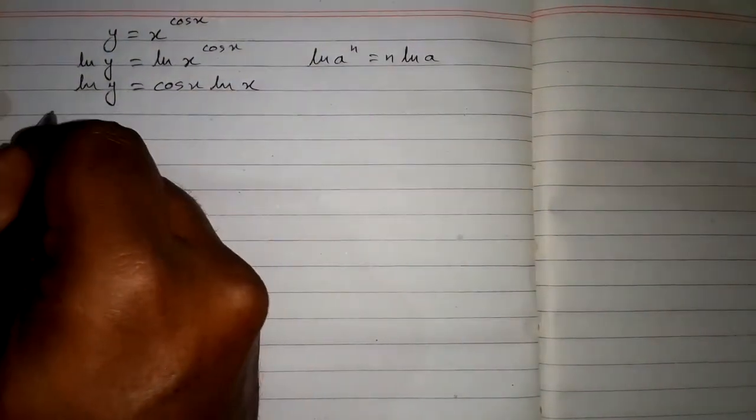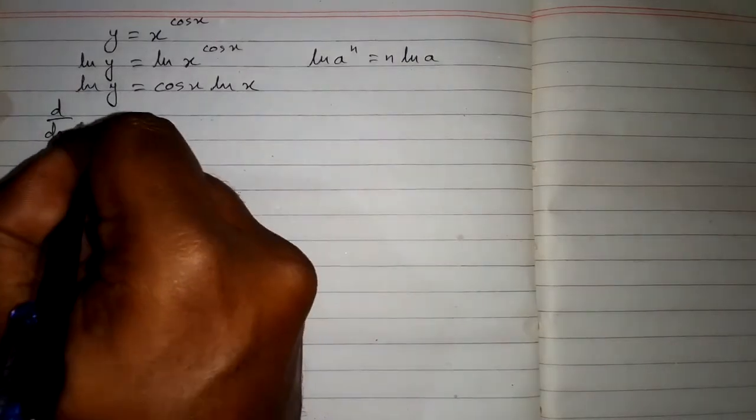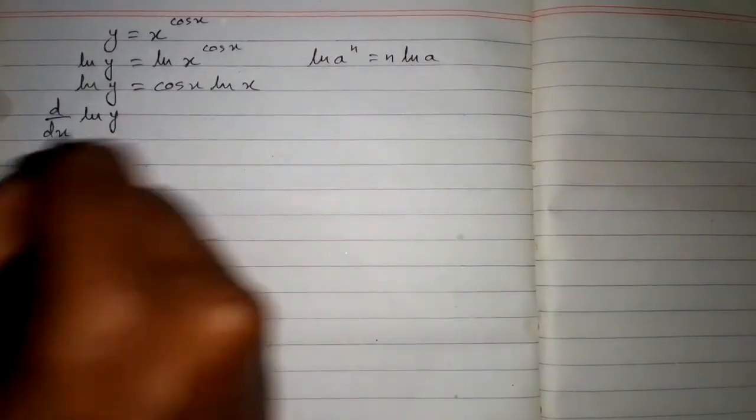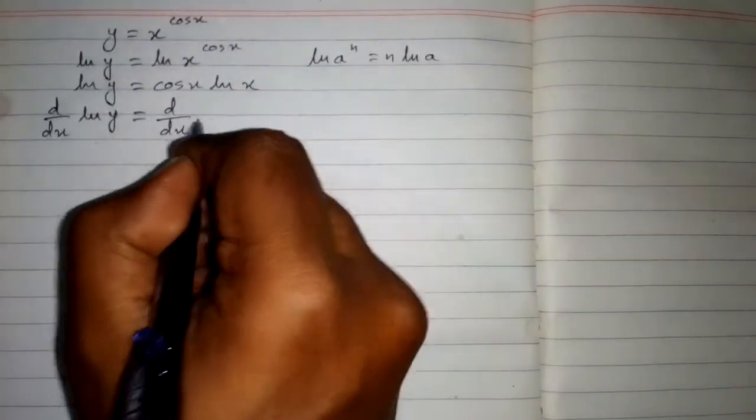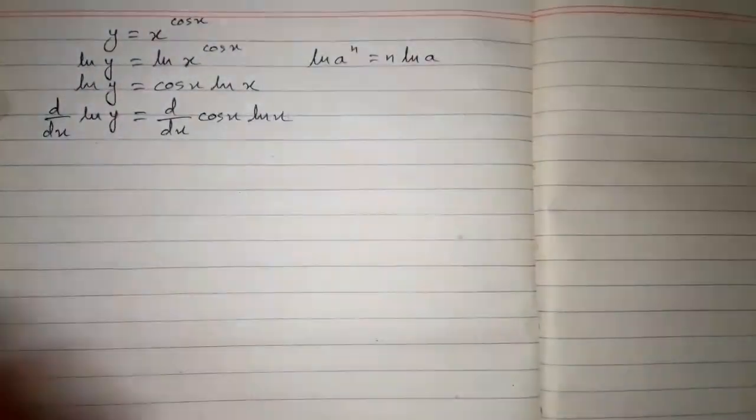Now we will apply derivative on both sides of the equation. So d by dx of ln y equals d by dx of cos x ln x.